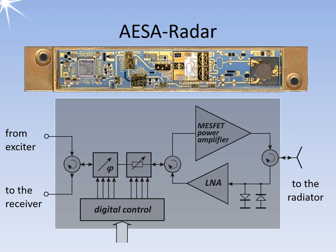The difference between active and passive antennas is that with a passive antenna, a central transmitter generates the entire transmission power. This is then fed to the antenna via a common supply line for all antenna elements.